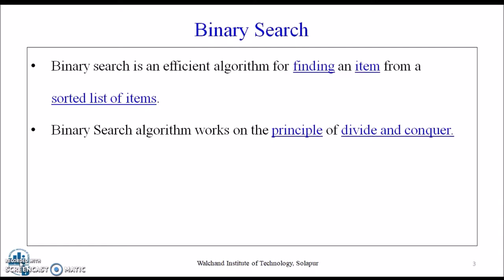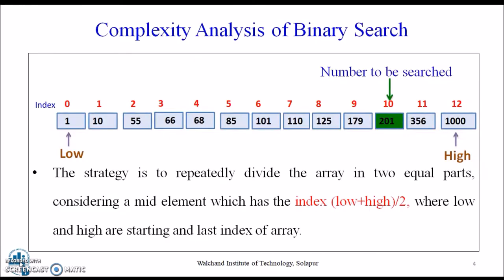Binary search is an efficient algorithm for finding an element, i.e., an item from a sorted list of items. Binary search works on the principle of divide and conquer strategy.